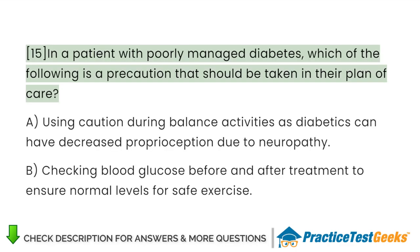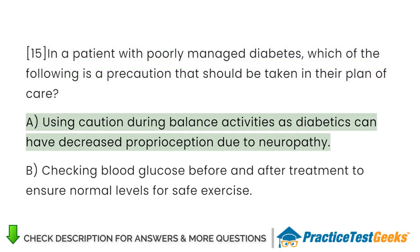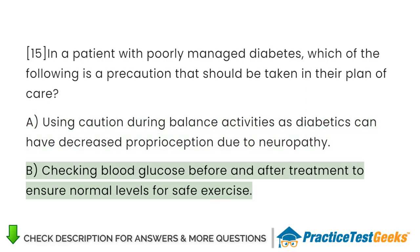In a patient with poorly managed diabetes, which of the following is a precaution that should be taken in their plan of care? A. Using caution during balance activities, as diabetics can have decreased proprioception due to neuropathy. B. Checking blood glucose before and after treatment to ensure normal levels for safe exercise.